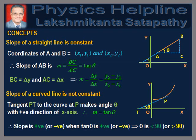Slope of a Straight Line. Consider a straight line segment AB in the xy-plane making angle θ with the positive x-direction as shown in the figure. Let the coordinates of A be (x1, y1) and B be (x2, y2). When we move from A to B along the graph, height gained is equal to BC, and horizontal distance travelled is equal to AC. Therefore, slope of AB is m = BC/AC. In triangle ABC, BC/AC = tan θ, which implies m = tan θ.